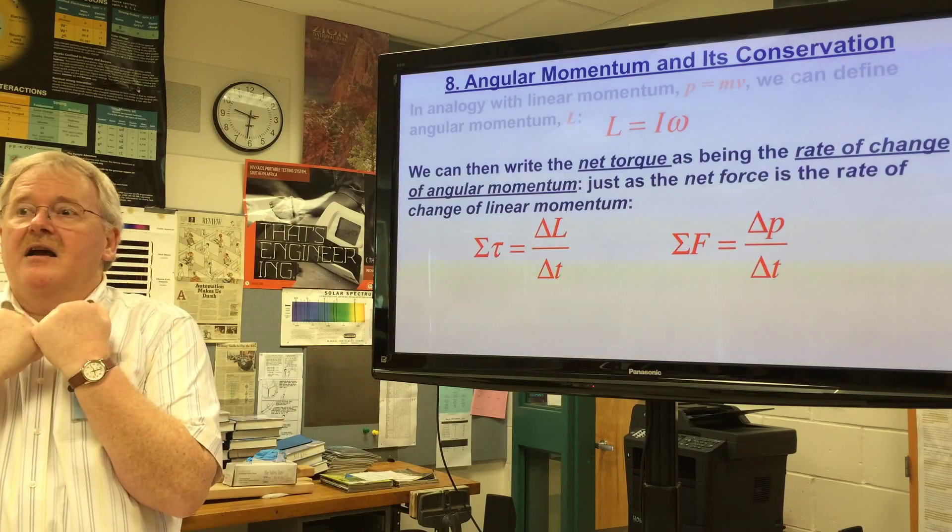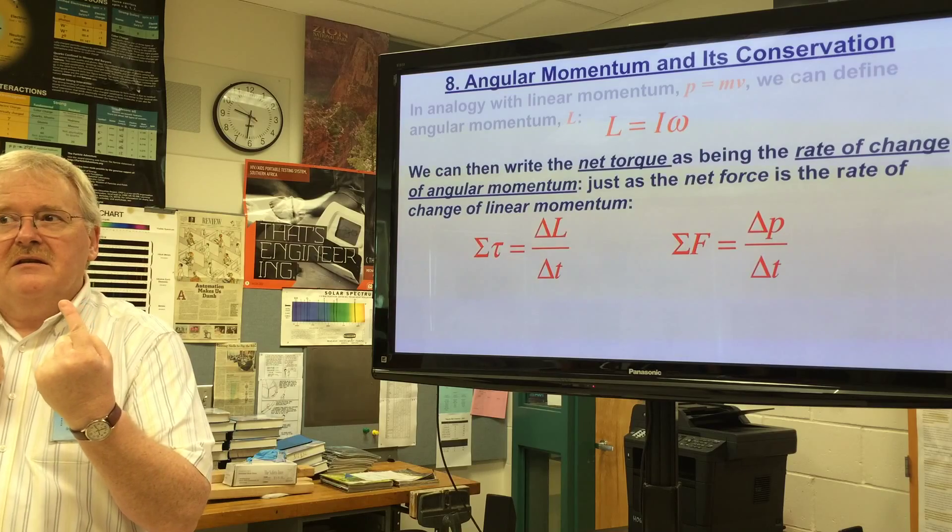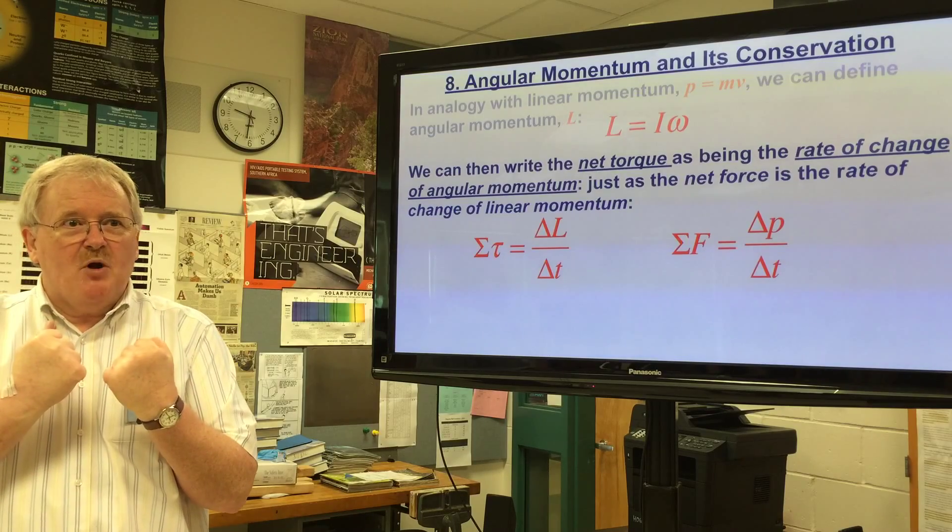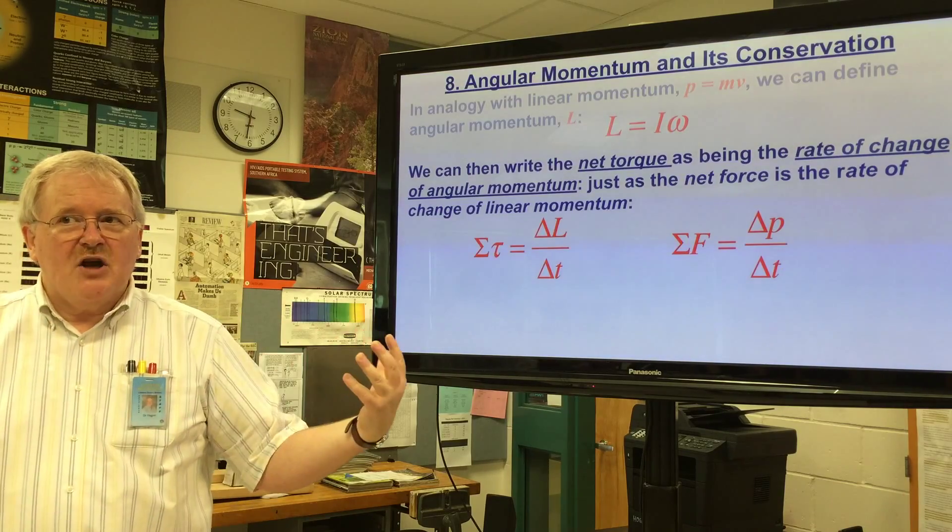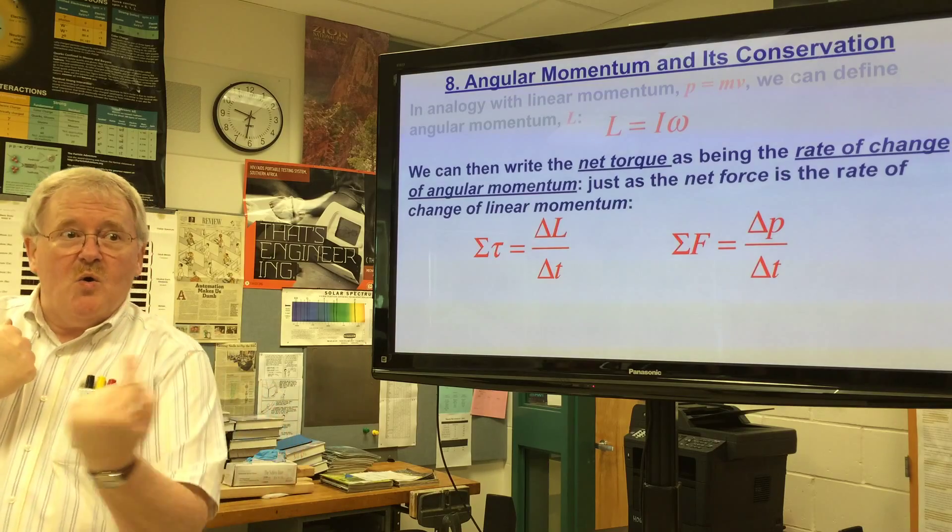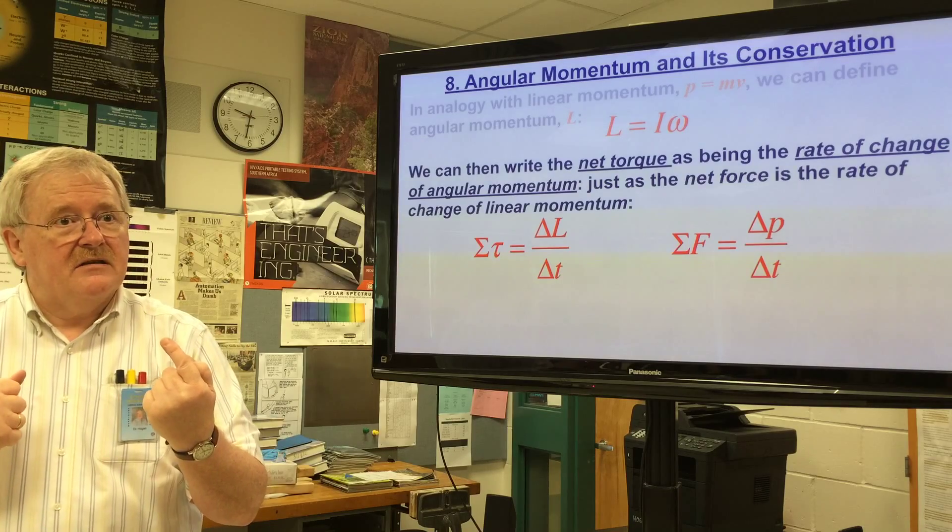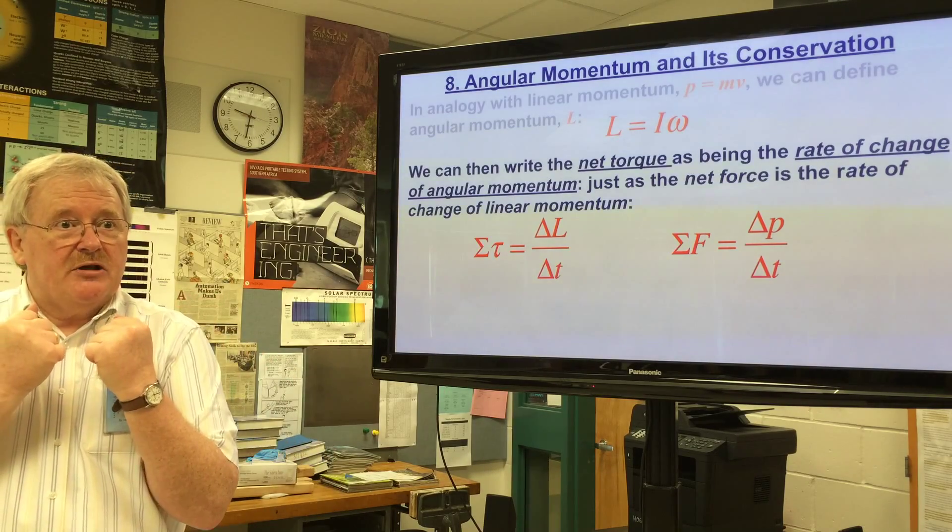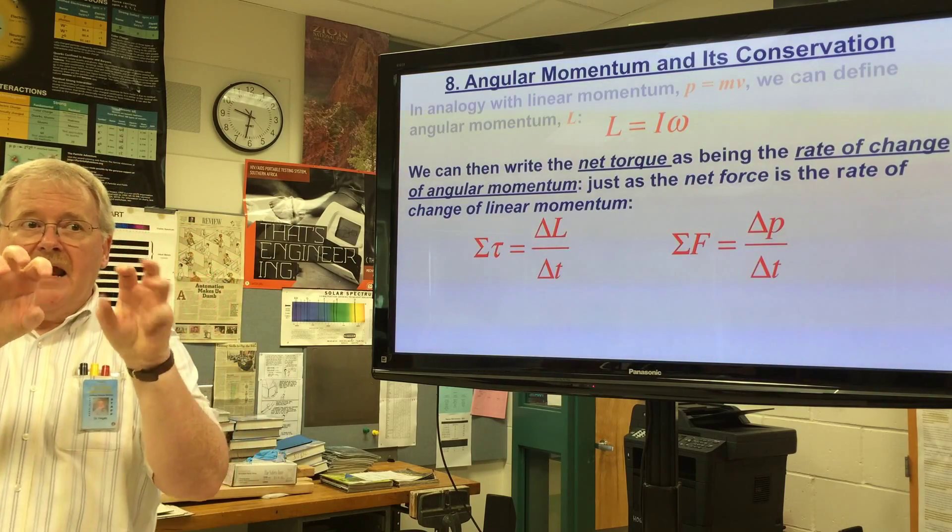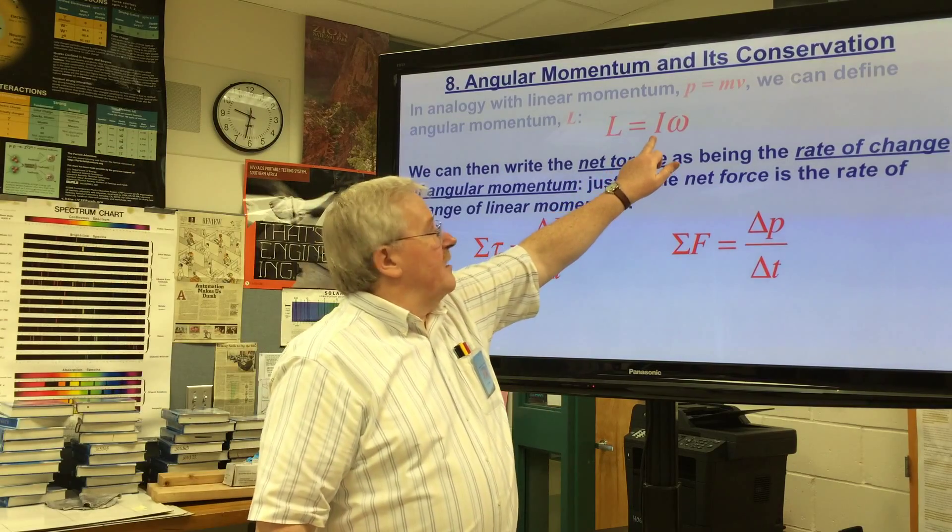This explains why an ice skater who starts a turn with his or her arms out like this brings it in, changing their moment of inertia - why they have to start spinning faster. Conservation of angular momentum makes them spin faster. They've changed their moment of inertia. It's only an internal force, that is the system changed from the inside, and so now in order for angular momentum to be conserved, naturally they start spinning faster because they've reduced their moment of inertia.